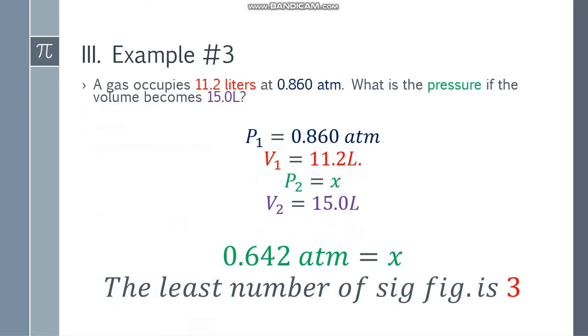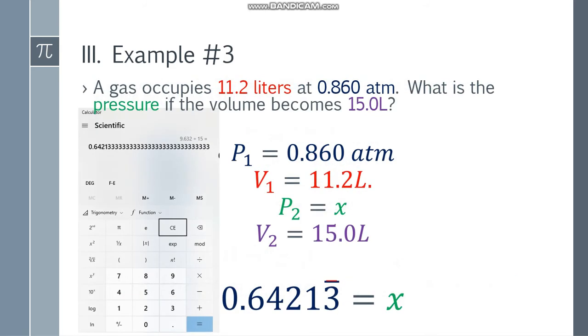0.86 times 11.2 equals 9.632, and X times 15 equals 15X. Divide both sides by 15, and you will get 0.64213 repeating decimal. What will be the final answer? 0.642 atm. Why? The least number of significant figures is 3. All three values have three significant figures, so round down to 0.642 atm.